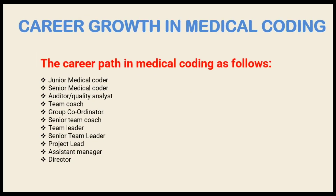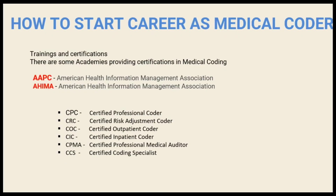The career growth path in medical coding is as follows: junior medical coder → senior auditor or quality analyst → team coach → group coordinator → senior team coach → team leader → senior team leader → project lead → assistant manager → director. You start your career as a junior medical coder.